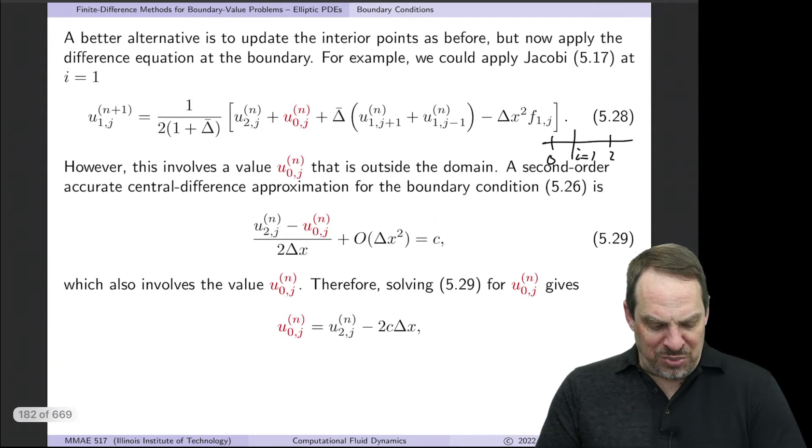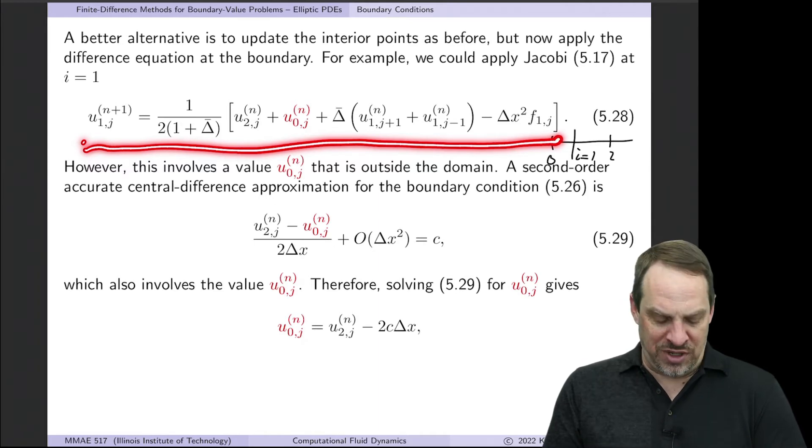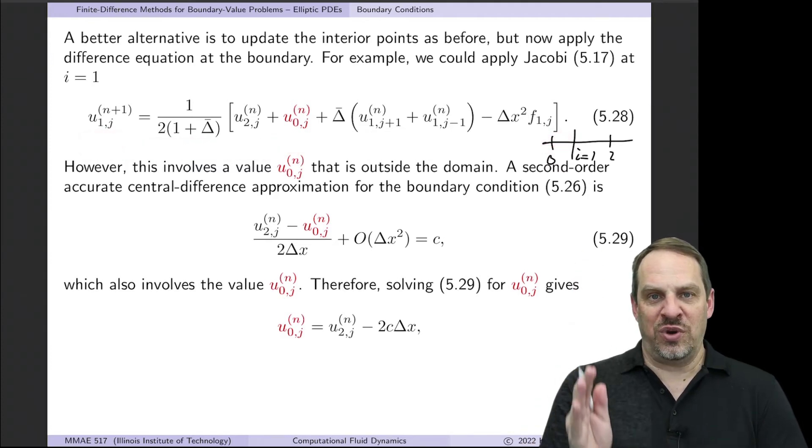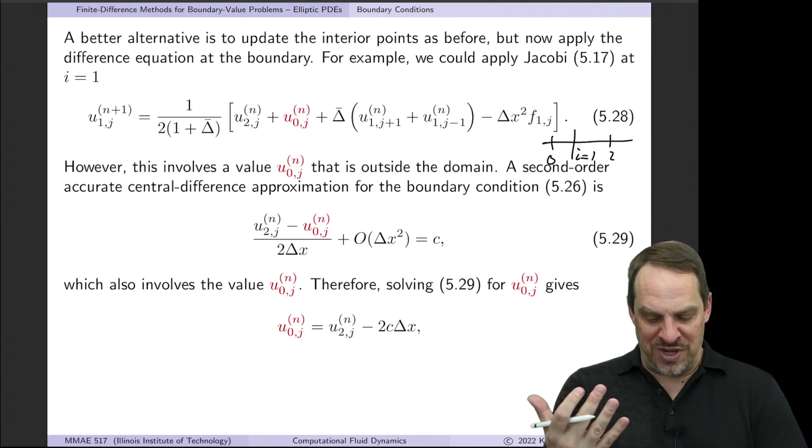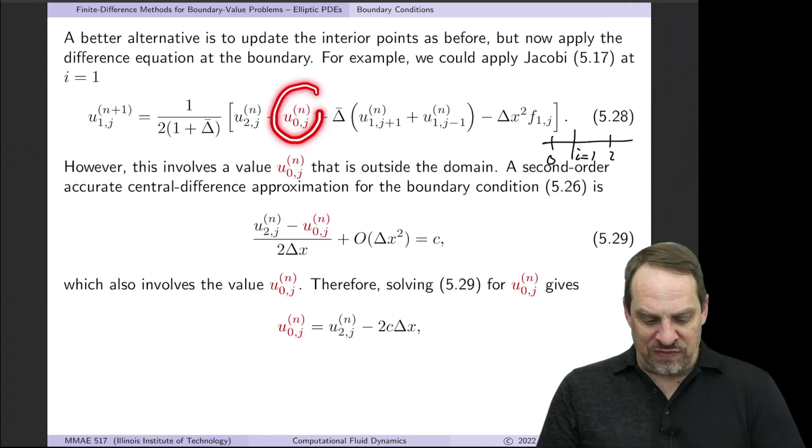First, let's start by applying our finite difference equation. Just say Jacobi for now so that we don't have to think about n and n plus 1s. So this is the Jacobi equation applied on the left boundary, the boundary where we have this Neumann boundary condition. The governing equation applies everywhere throughout the domain, including the boundaries. So let's just apply it right at the boundary.